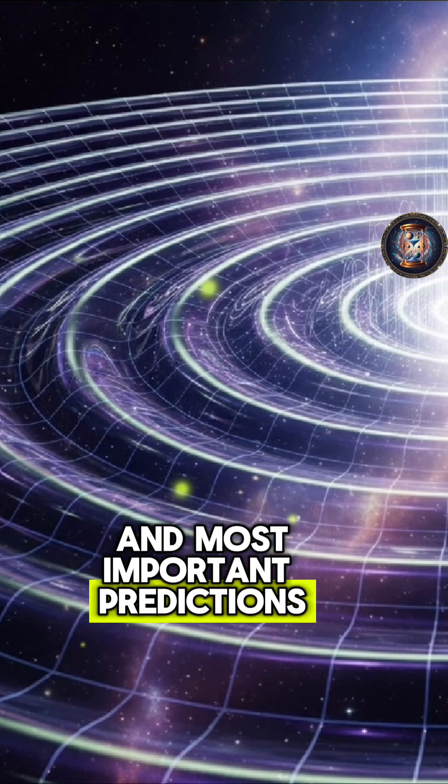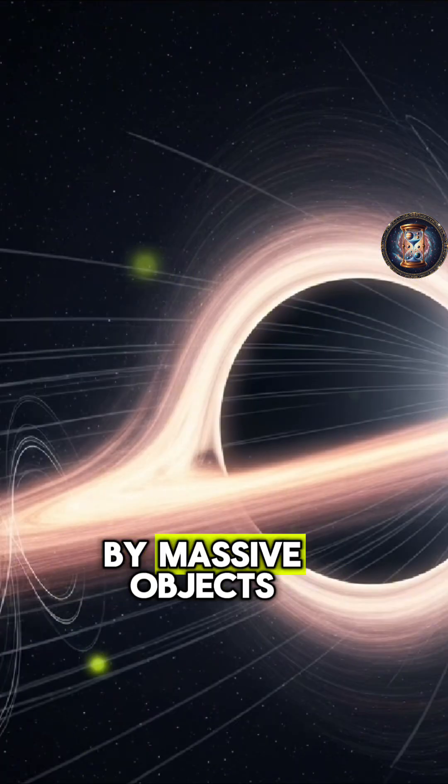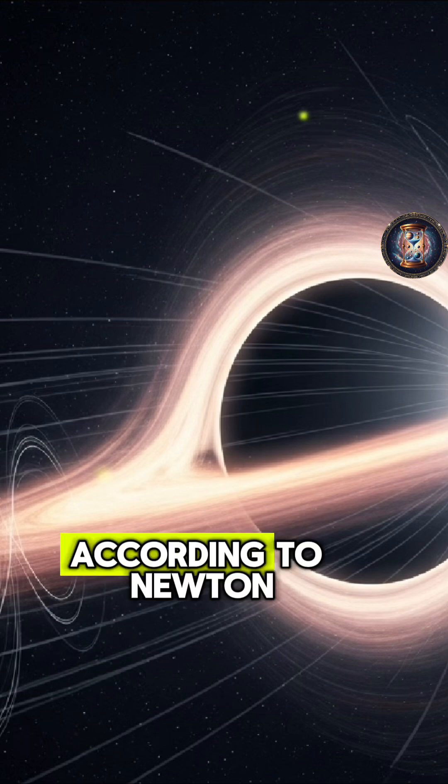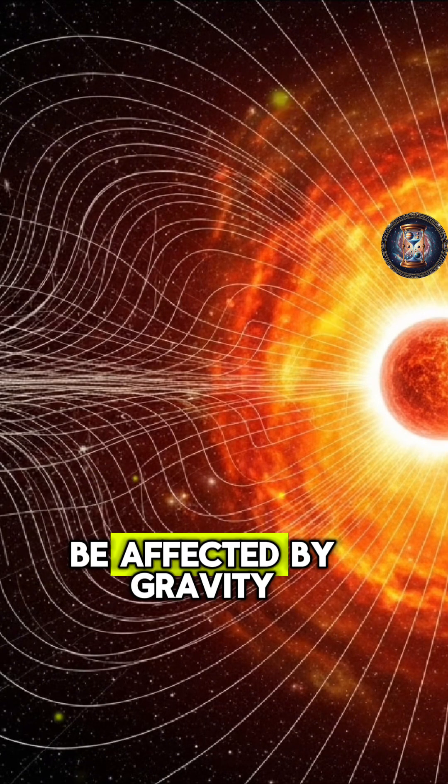One of the earliest and most important predictions of general relativity was the bending of light by massive objects. According to Newton, light has no mass and therefore should not be affected by gravity.